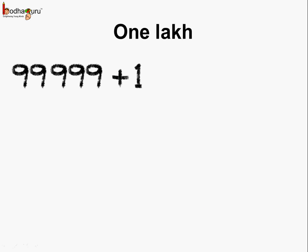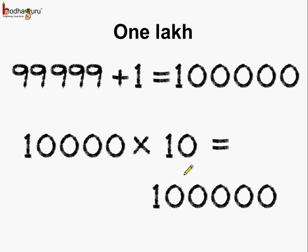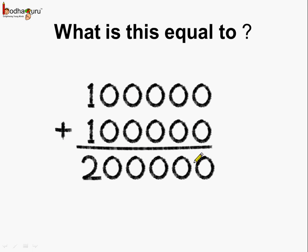So how do we get 1 lakh? If we add 1 to 99,999 we get 1 lakh. Or we can also do it another way — if we multiply 10,000 by 10, what do we get? We get 100,000, and this is equal to 1 lakh. So now you know what 1 lakh is equal to.